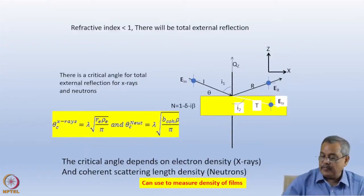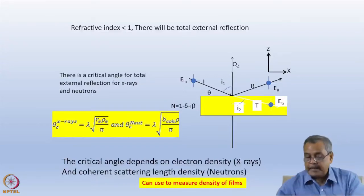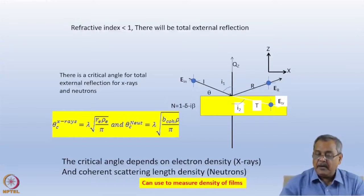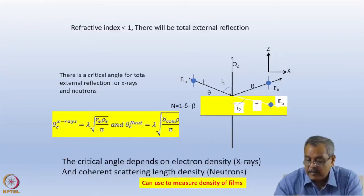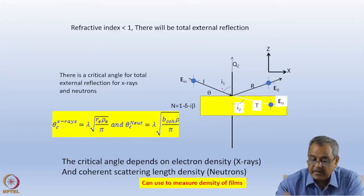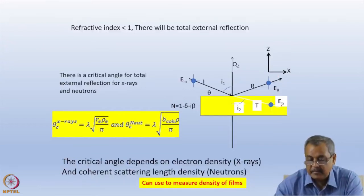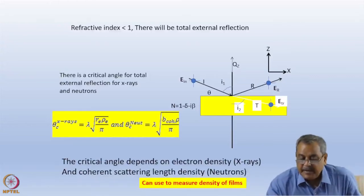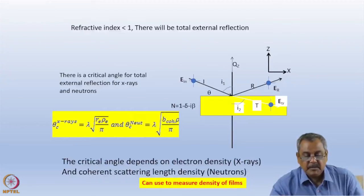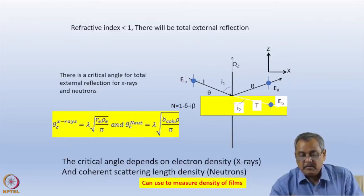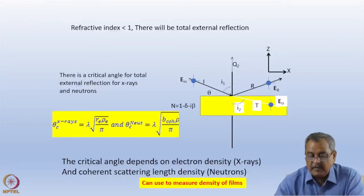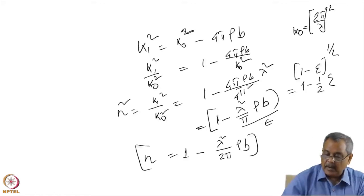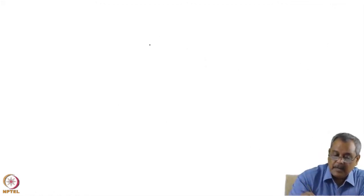Now let's figure out what the reflectivity of a medium should be and what the critical angle is. For specular reflectometry, there is an incident beam, a reflected beam, and a transmitted beam in the medium — just as we studied in school when discussing refraction. Because the medium has a refractive index less than one, it exhibits total external reflection, and there is a critical angle for reflection. Let me derive it for you.